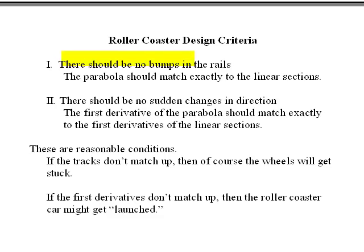Here's a list of the design criteria. There should be no bumps in the rails, meaning the parabolic section should exactly match up to the linear sections. Second, there should be no sudden changes in direction — the first derivatives of the parabola should match exactly to the first derivatives of the linear sections where they meet. If the tracks don't match up, the wheels of the roller coaster car would get stuck. If the first derivatives don't match up, you have the potential to launch the roller coaster car.